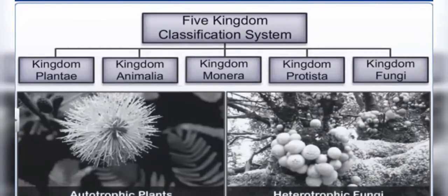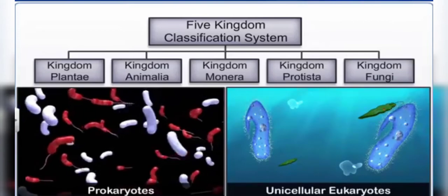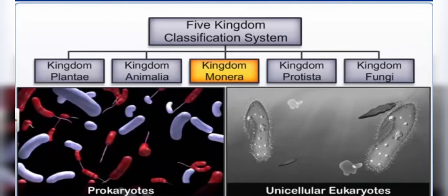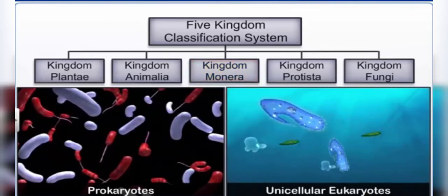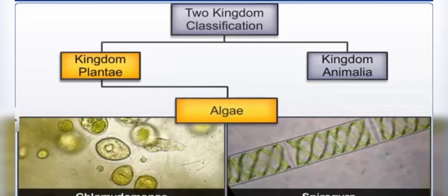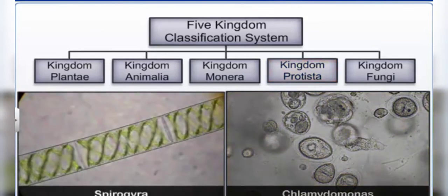Based on differences in cell wall composition, the heterotrophic fungi differ from autotrophic plants and were grouped under Kingdom Fungi. All prokaryotic organisms were grouped together under Kingdom Monera, and unicellular eukaryotic organisms were grouped under Kingdom Protista. For example, in the two-kingdom classification, unicellular Chlamydomonas and multicellular Spirogyra were both placed under algae in Kingdom Plantae. In the new classification, Chlamydomonas moved to Kingdom Protista while Spirogyra remained in Kingdom Plantae.